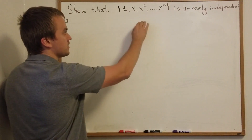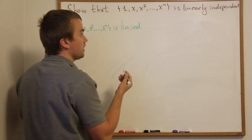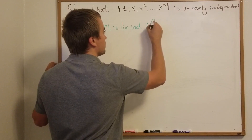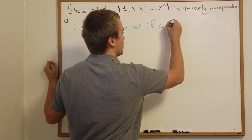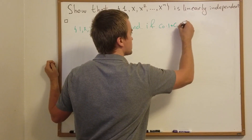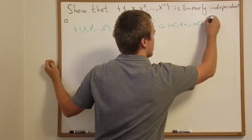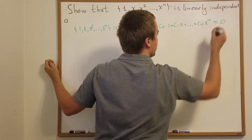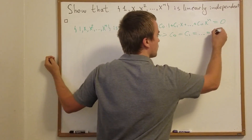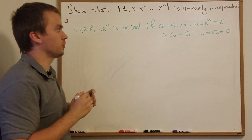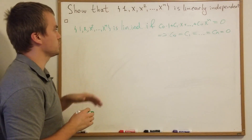So we're saying that this set is linearly independent if, for any linear combination of its elements — so c0 times 1, plus c1 times x, plus cn times x^n — when this linear combination equals 0, we want to show that all the coefficients are equal to 0. If we can show this, we will get that this set is linearly independent by definition.